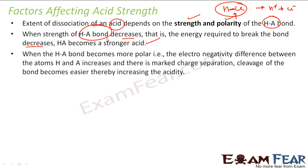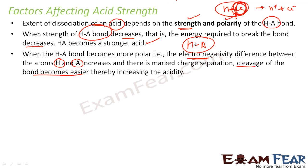If the H-A bond is strong, it will require more energy to break, and the acid will be a weak acid. Regarding polarity — if the bond becomes more polar, meaning the atom attached to H is more electronegative, the electronegativity difference between H and A increases. If the electronegativity difference increases, it is easy to break the bond and form H⁺ and A⁻. If it is difficult to break the bond, it will be difficult to form H⁺ and A⁻. So bond breakage depends on both bond strength and bond polarity.